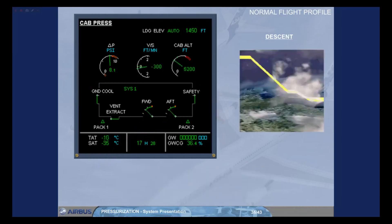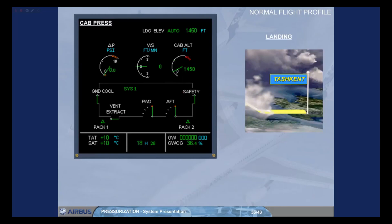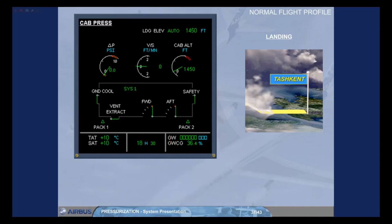During the descent phase, the pressure rate is optimized so that the cabin reaches landing field pressure just prior to landing. For passenger comfort, the automatic function will limit the rate of cabin descent to a maximum of approximately 750 feet per minute. At touchdown, the cabin altitude should be at the airfield elevation and there should be no differential pressure. To ensure this, just after landing, the outflow valves are fully opened by the system controller. Once the outflow valves are fully open, there is an automatic changeover of the system controllers in preparation for the next flight. This happens so that both systems are used equally.